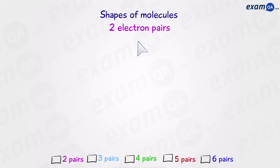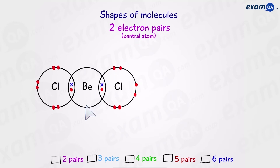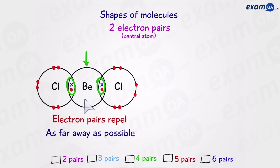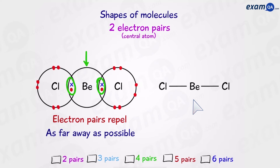Starting with molecules that have two electron pairs around their central atom — for example, BeCl2. The central atom is beryllium and we have two bonded pairs and no lone pairs. Electron pairs repel because the electrons are negative and want to get as far away from each other as possible. So the two electron pairs are on opposite sides of beryllium. The angle between the two bonds is 180 degrees, and the name of this shape is linear.